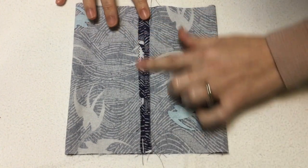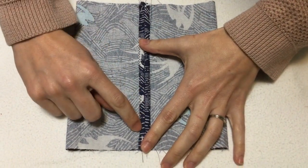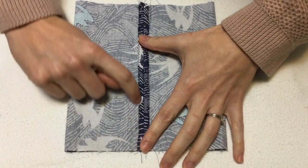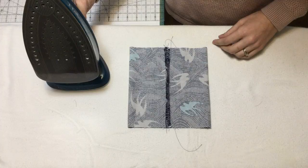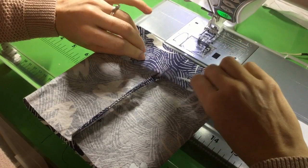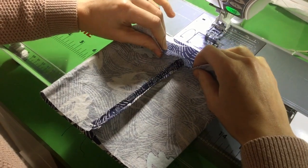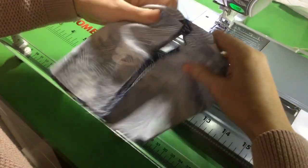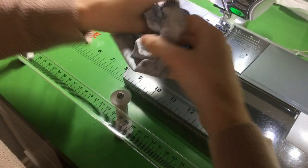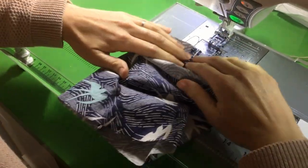With a straight stitch we'll topstitch one of these seam allowances down. Because there are two layers here, before I stitch down this seam allowance I have to move this bottom layer out of the way, so I'll do that by turning it right side out and stitching it this way.